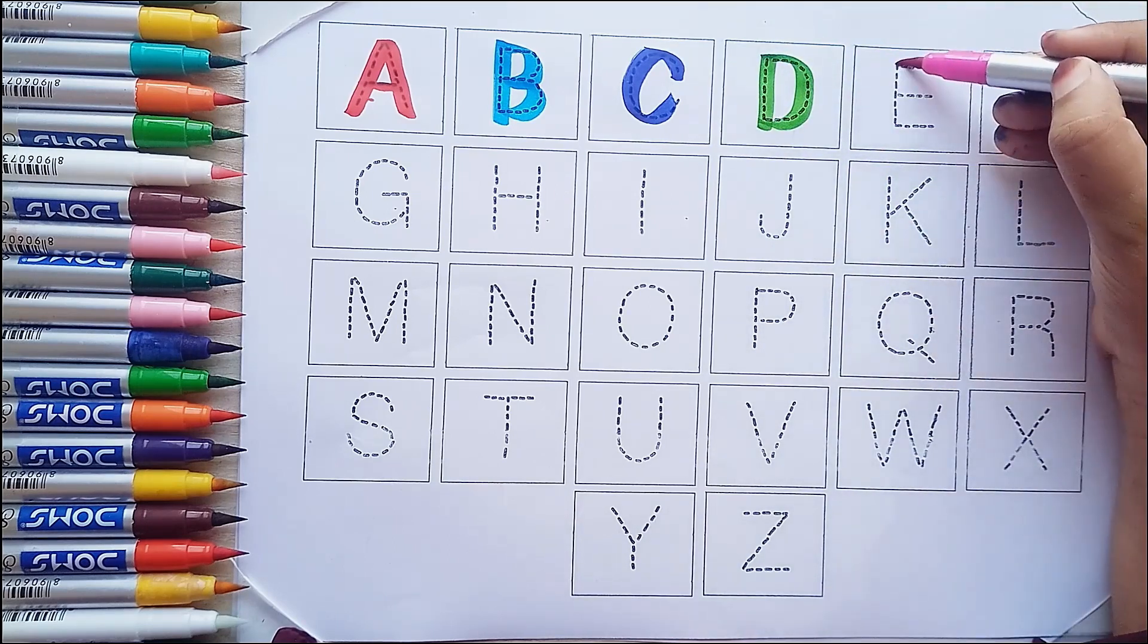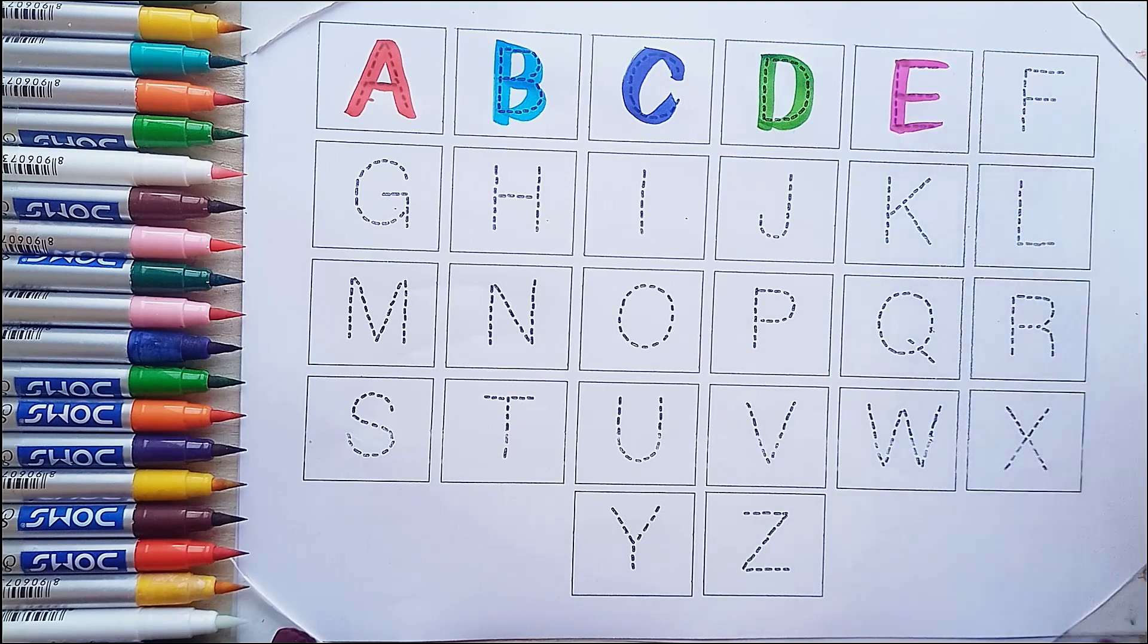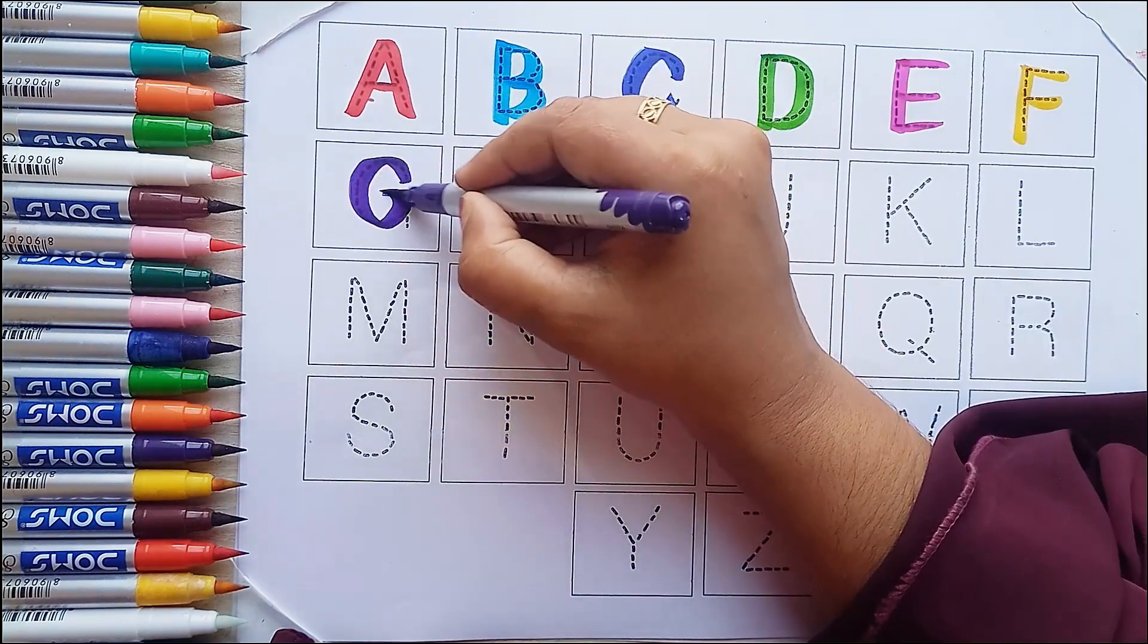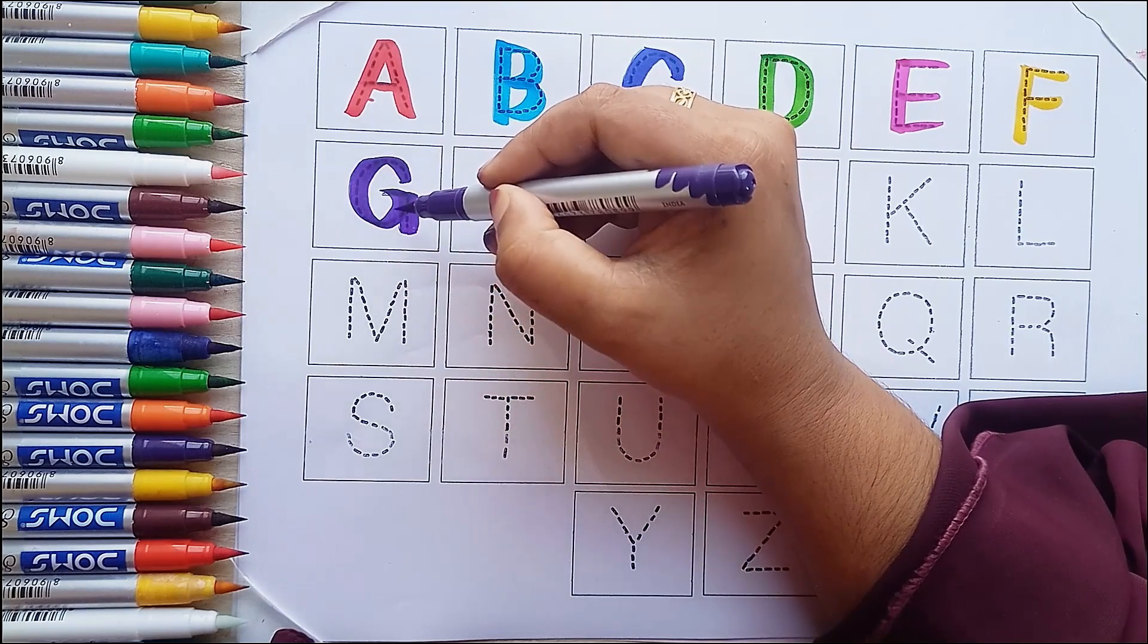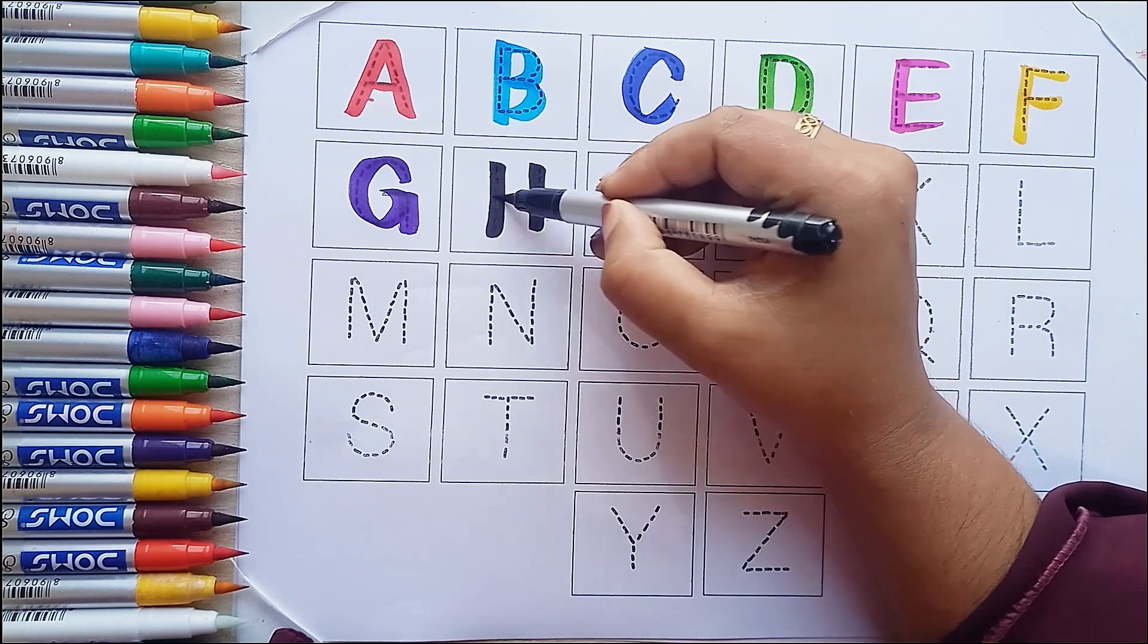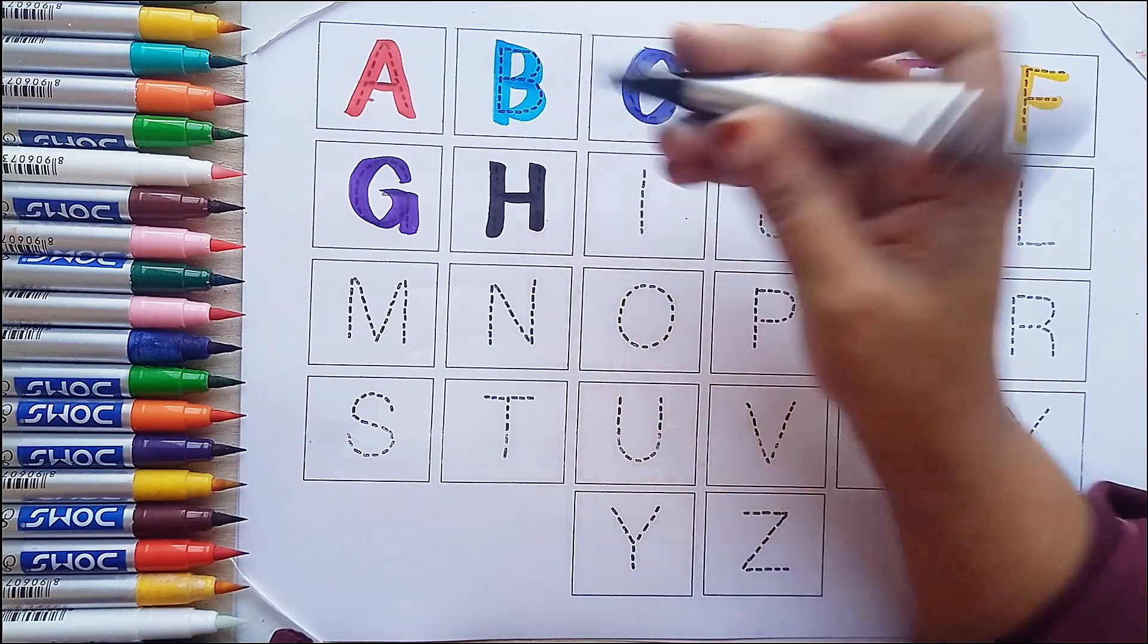Pink color E, E for eagle. Yellow color F, F for flower. Violet color G, G for god. Black color H, H for horse.